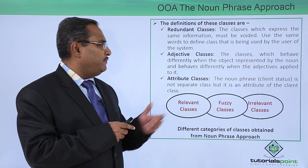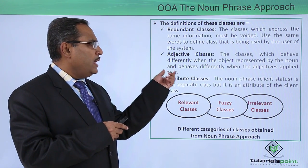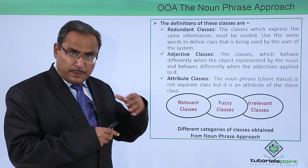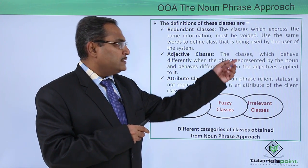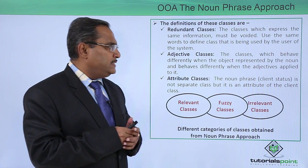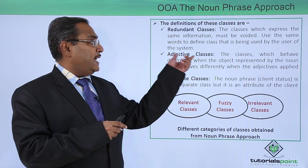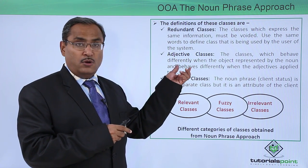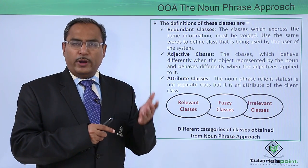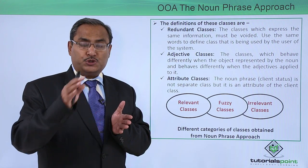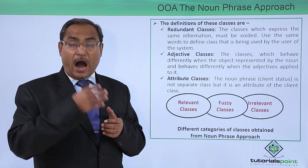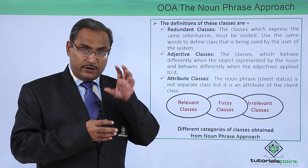Adjective classes are classes which behave differently when the object is represented by the noun versus when adjectives are applied to it. So whenever a class behaves differently as a noun and differently when adjectives are applied to it, it is known as an adjective class. For better understanding, we will be going through case studies in the last portion of this tutorial, where we have used noun phrase filtering to extract classes from real-life examples.